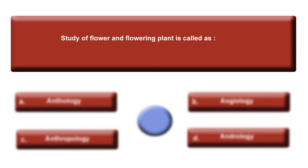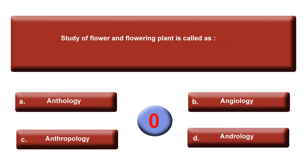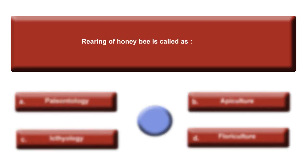Next question: The study of flowers and flowering plants is called — Option A: Anthology. Option B: Andrology. Option C: Anthropology. Option D: Andrology. Your time is up. The answer is A, Anthology.